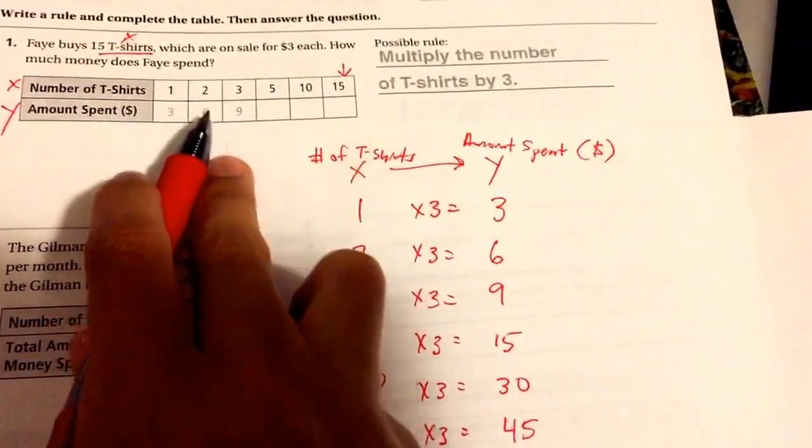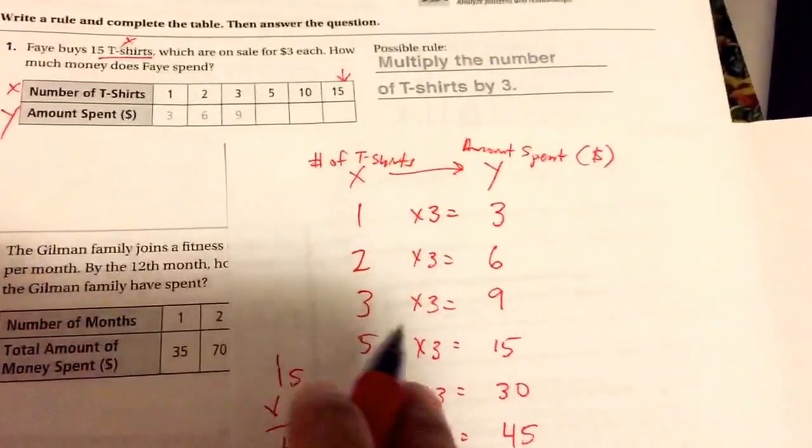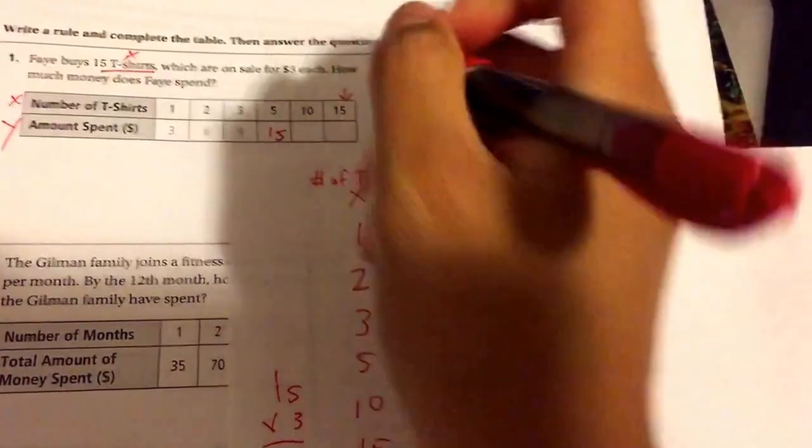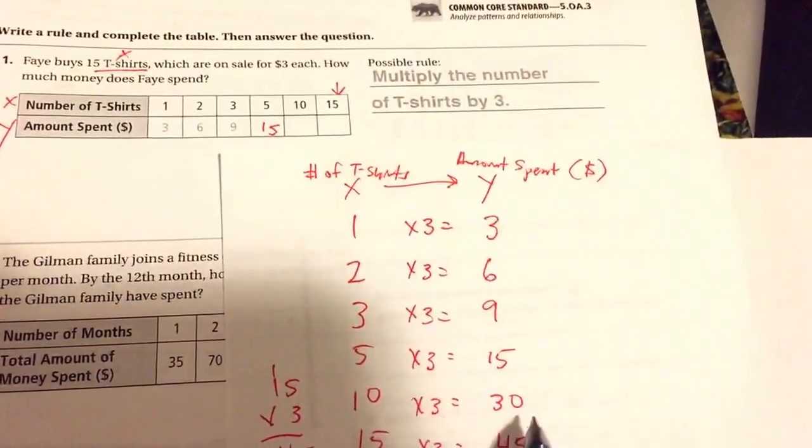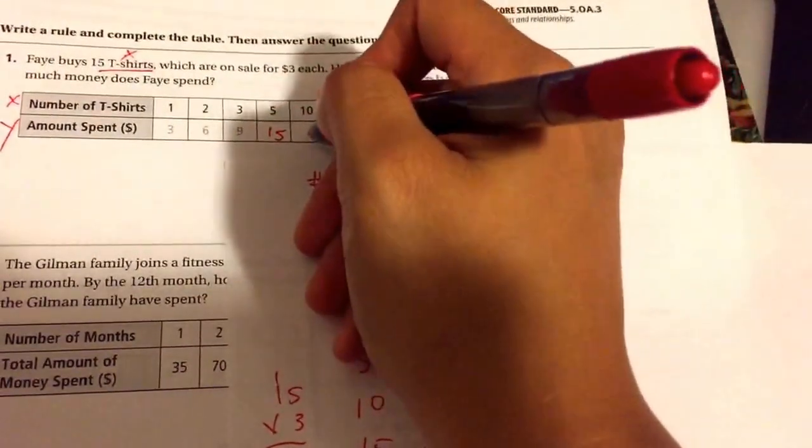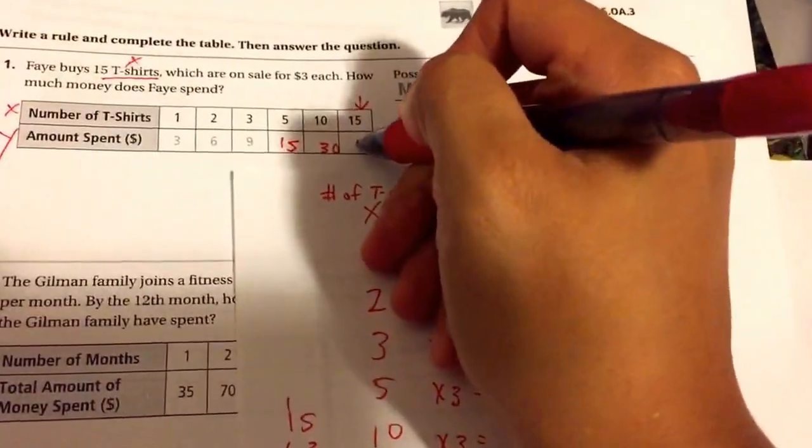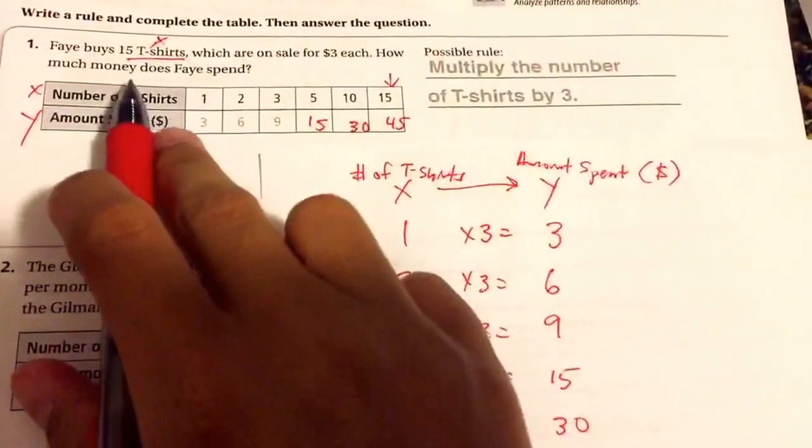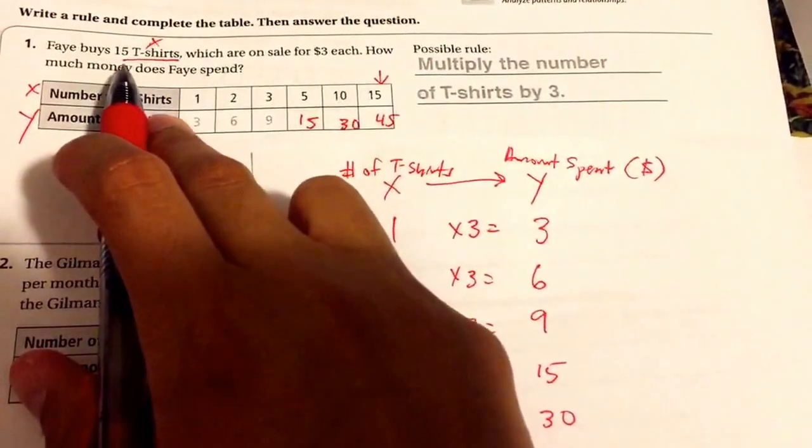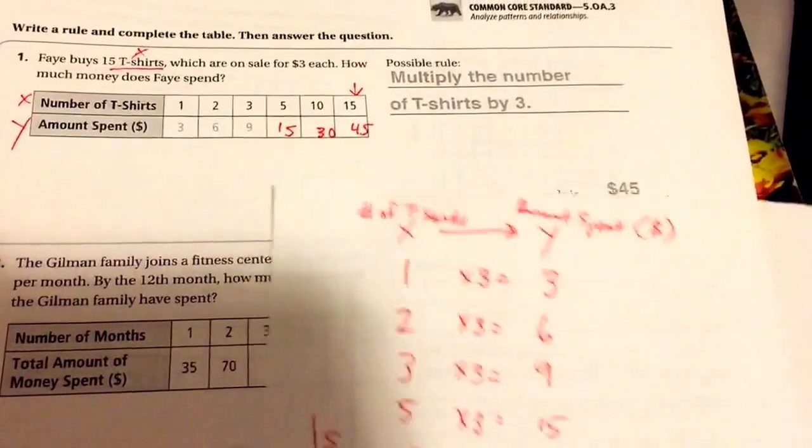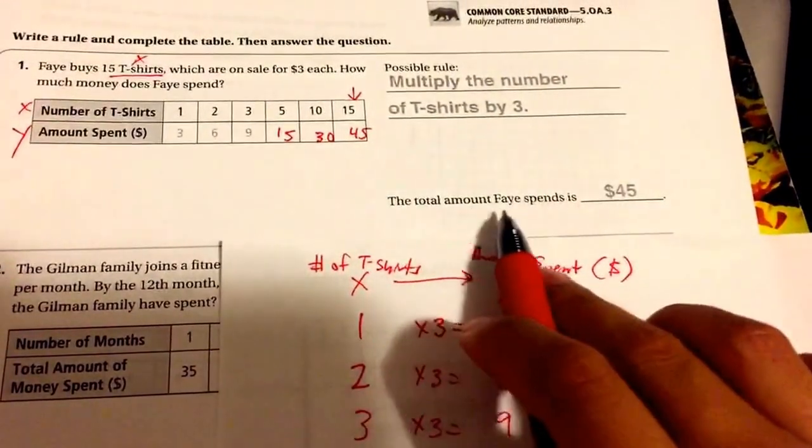Ten, thirty, because ten times three is thirty, and fifteen, forty-five. And they're asking how much does Faye spend to buy fifteen t-shirts? We know that the answer is she spends forty-five dollars, so the total amount Faye spends is forty-five dollars.